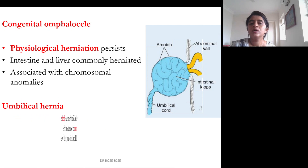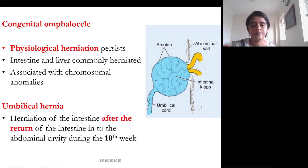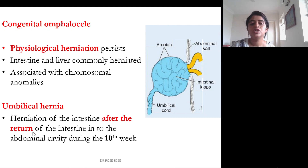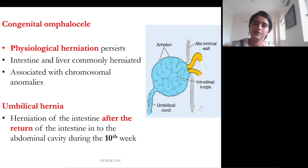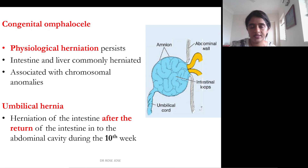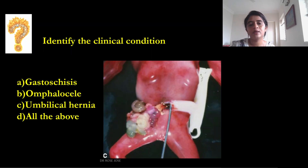Umbilical hernia refers to herniation of intestine after the return of the intestine into the abdominal cavity during the 10th week — it is not a persistent herniation. The physiological umbilical hernia gets reduced, and if something comes out through the umbilicus after that, it is called umbilical hernia.